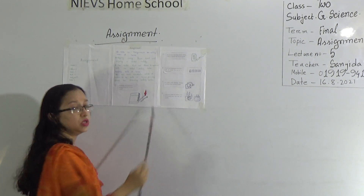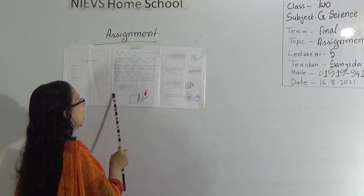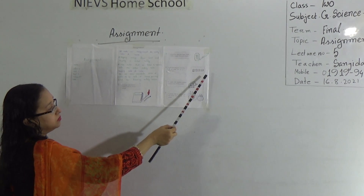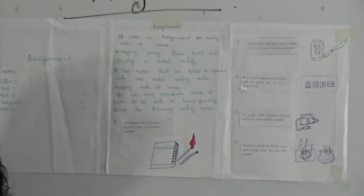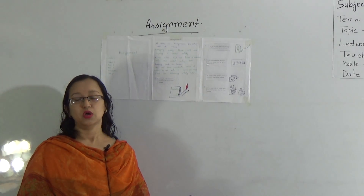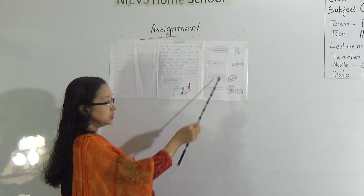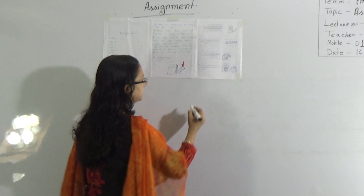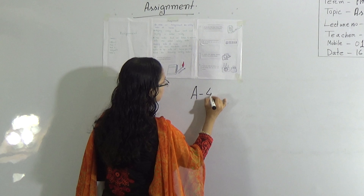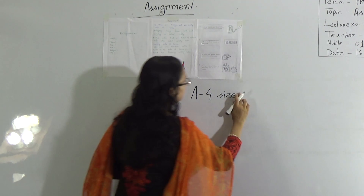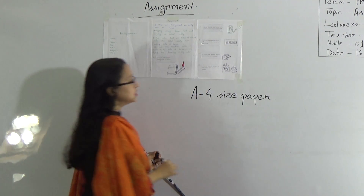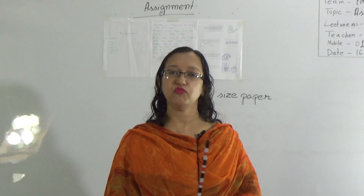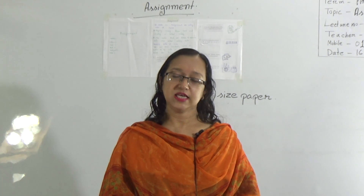My dear students, here are the five safety rules that we need to follow at our home, and this is the assignment when you write these five points. You can draw pictures of a matchstick, blade, knife, electric sockets, electric appliances, and the stove. If you cannot draw, no problem — you can submit your assignment after writing these points. You must do this assignment on A4 size paper. I hope you understand today's assignment and you will submit it properly. Until then, keep well. Assalamualaikum.